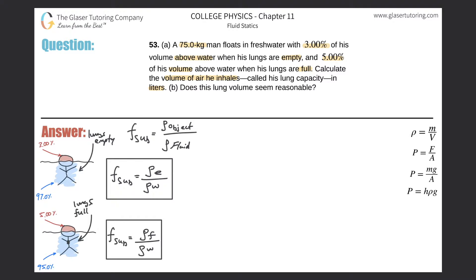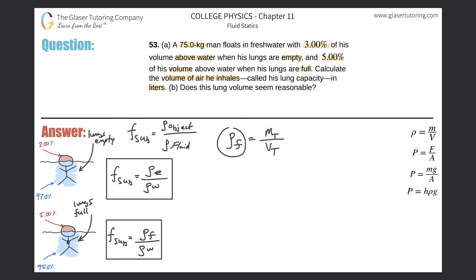The density of the man when his lungs are full is going to equal his total mass when his lungs are full divided by his total volume when his lungs are full. This should make intuitive sense: density equals total mass divided by total volume.